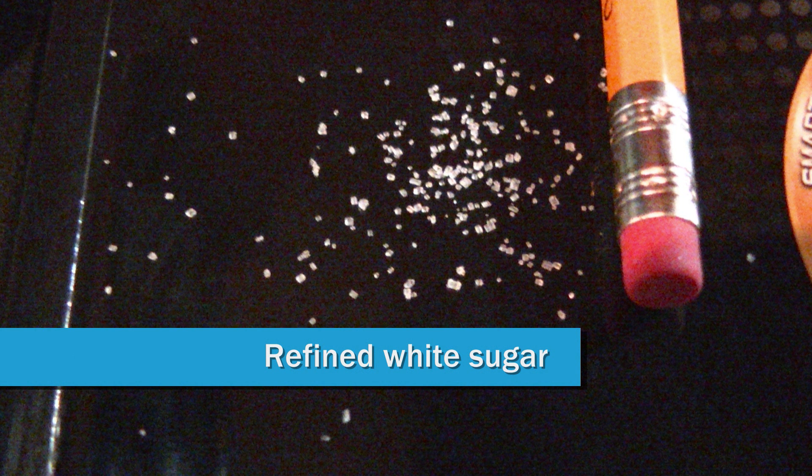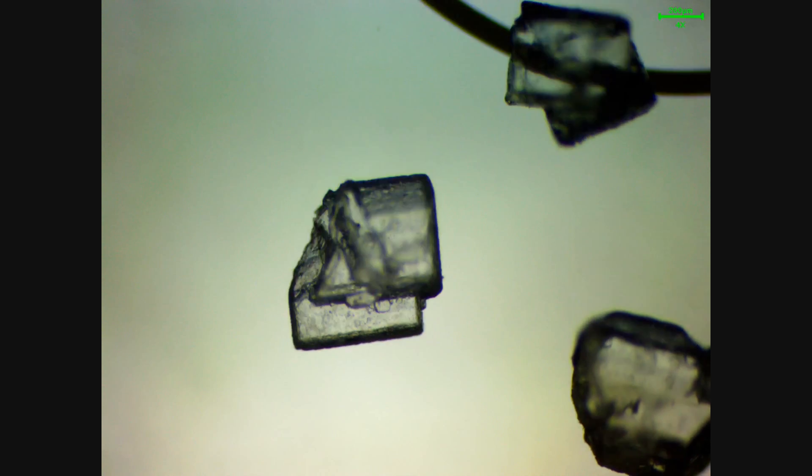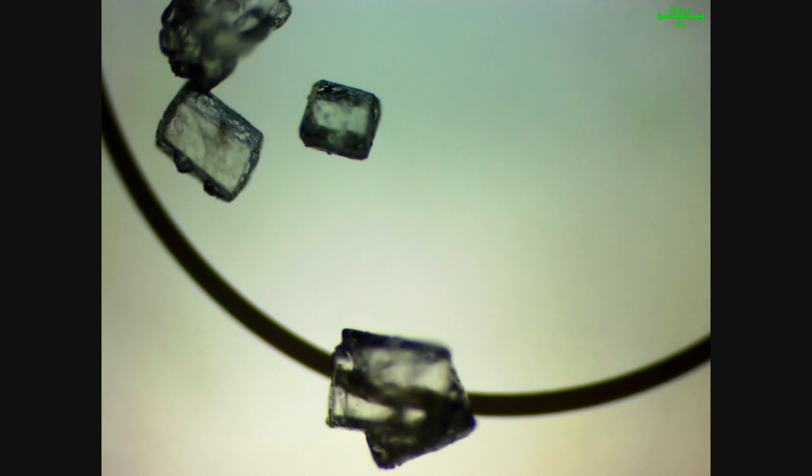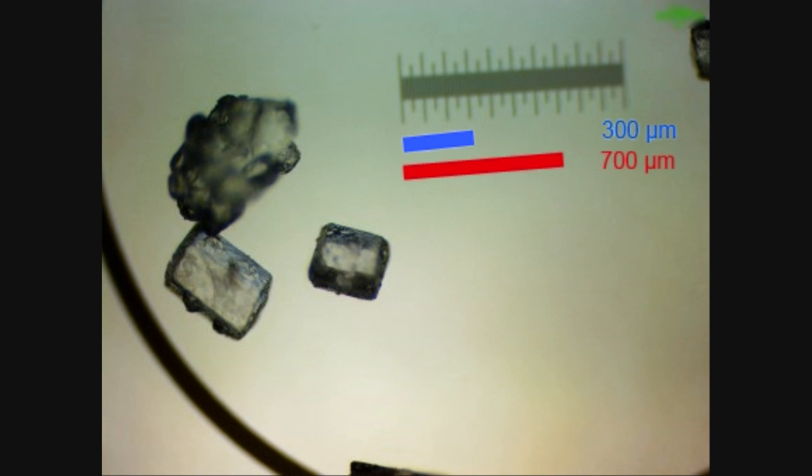First up is refined white sugar, a collection of various sized crystals. They're very irregular-shaped, clumped, clustered, and they range from 300 to 700 micrometers.